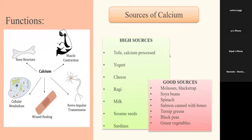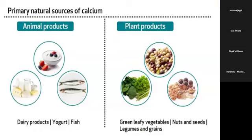When we talk about sources of calcium, there are foods which are high sources and foods which are good sources — the level of calcium varies. Tofu, yogurt, cheese, ragi — ragi is a very good source of calcium — milk, sesame seeds, and sardines provide a good amount of calcium. For plant products, you have sesame seeds, green leafy vegetables, nuts and seeds, ragi, and legumes and grains. Both animal and plant products provide good amounts of calcium.